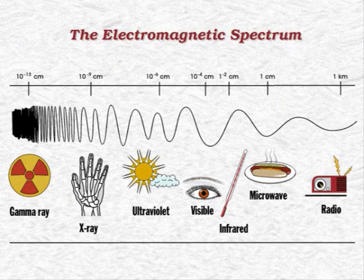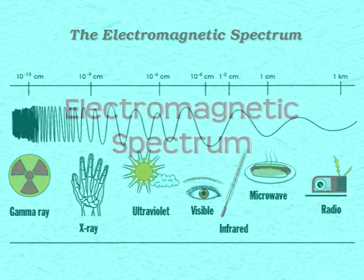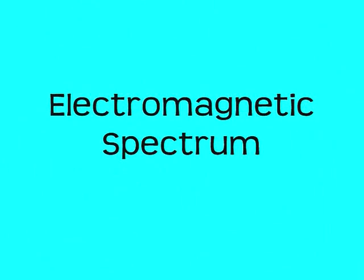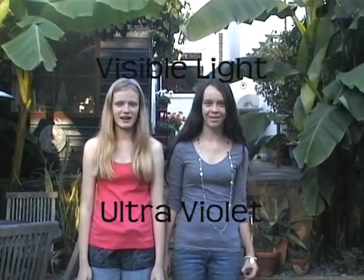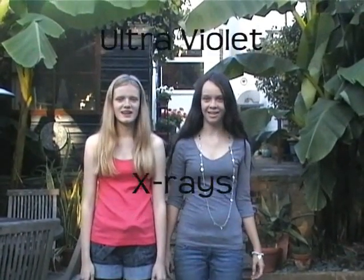Hi, today we're going to talk to you about the electromagnetic spectrum. There are seven types of radiation. These are radio waves, microwaves, infrared radiation, visible light, ultraviolet, x-rays and gamma rays. We're going to talk to you about the properties and uses of these radiations.